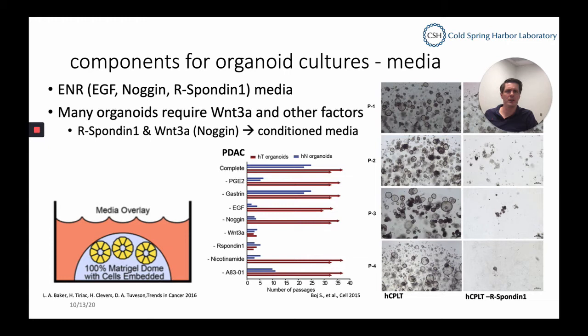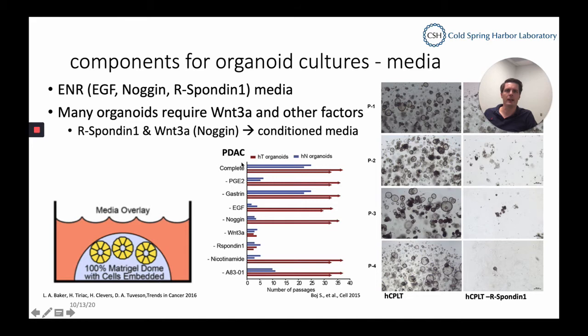Other important components for organoid cultures are media. A lot of organoid media is based on the ENR method — that means EGF, Noggin, and Rspondin in the media. However, many organoid cultures also require Wnt3A and other factors. Most labs around the world currently use Rspondin, Wnt, and Noggin from conditioned media. If one of these media components isn't working properly, you can fail very fast.